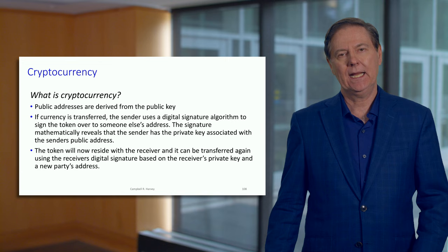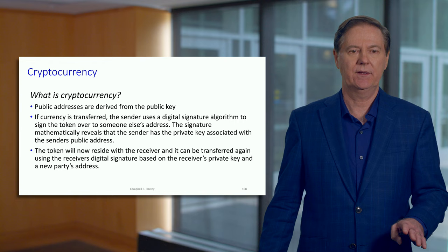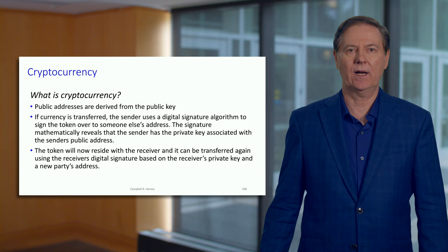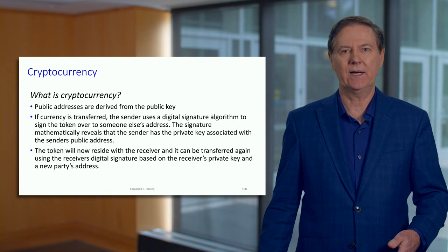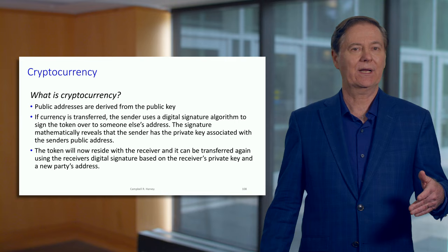The public key is used to derive an address, and I'll show you how that's actually done. When we transact in cryptocurrency, if I want to receive, I set up an address. I generate a random number — that's my private key. Then I pass that through an algorithm, it gives me a public key, I derive an address, and then somebody signs over their crypto to me.